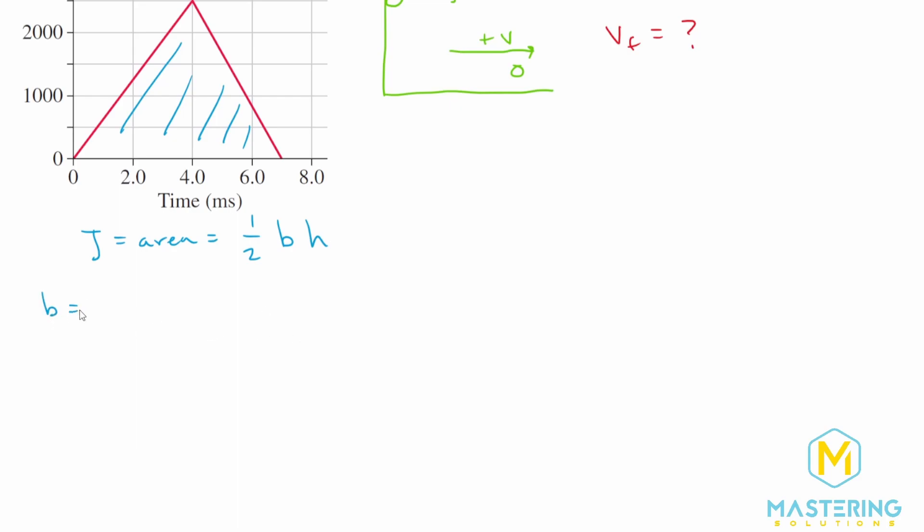So the base in this instance is time, our delta T, which is equal to seven milliseconds, or seven times 10 to the negative three seconds. The height in this case is a force, or newtons, which is 2500 newtons.